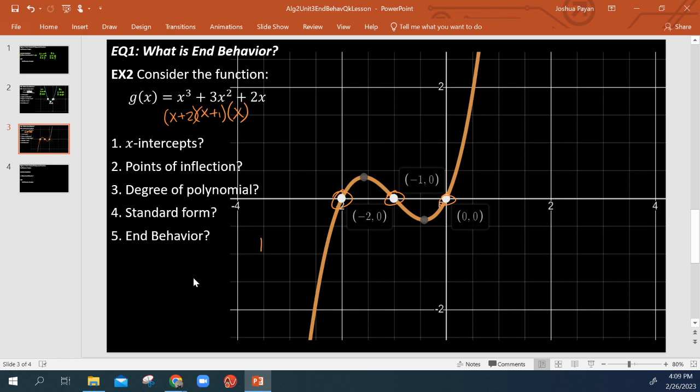So left end behavior, let's look down here. As x approaches negative infinity, we see that g approaches negative infinity also, because we're decreasing infinitely. Okay, and our right end behavior is simply going to be as x approaches positive infinity, that g also approaches positive infinity.